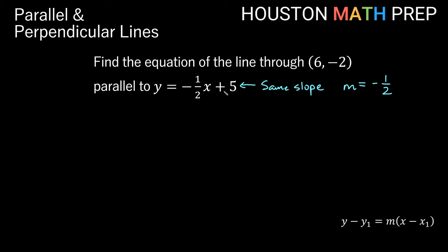We won't be using this plus 5 — that's the y-intercept for this line. All we care about is that our line is parallel to this line. It shouldn't have the same y-intercept, but it should have the same slope. So we'll use m equals negative one half. We have a point it goes through: x1 of 6 and y1 of negative 2. If you have a point and a slope, you can use the point-slope equation, which is down in the bottom right corner.